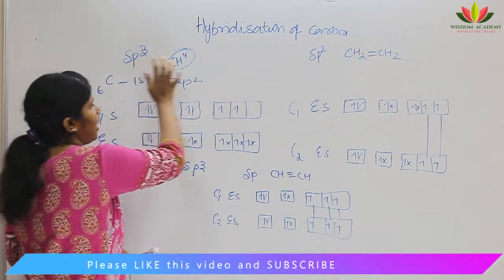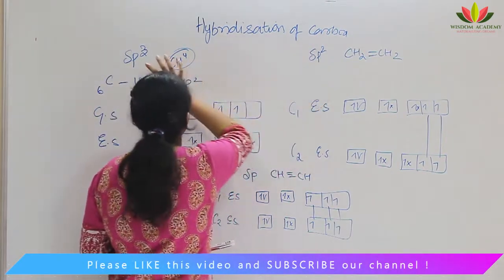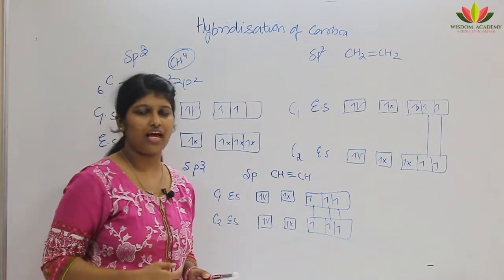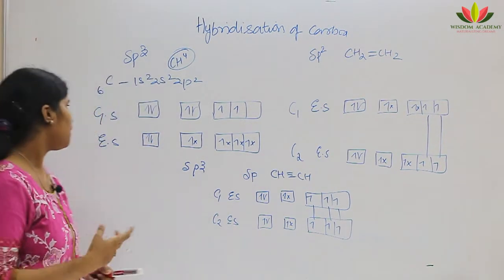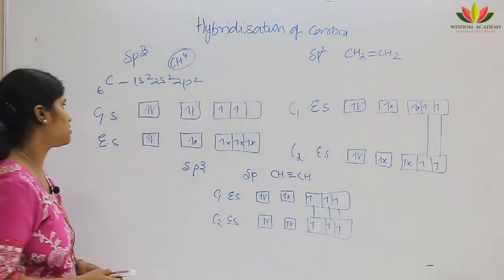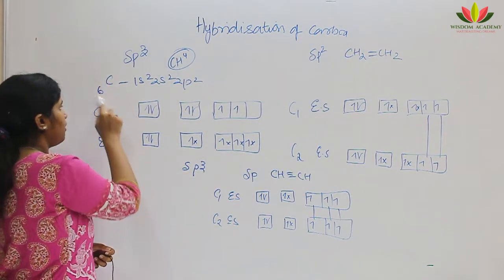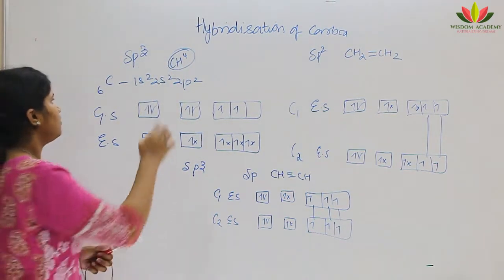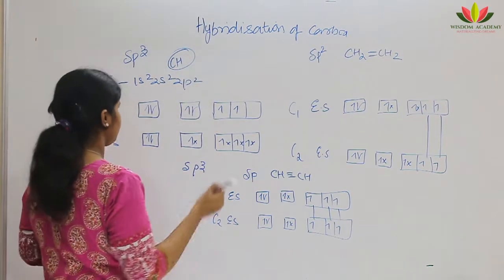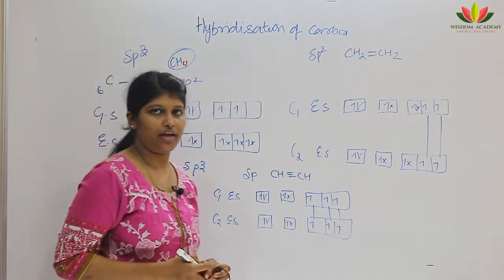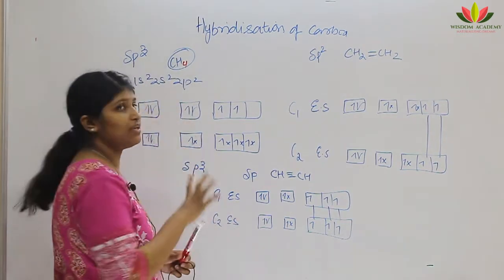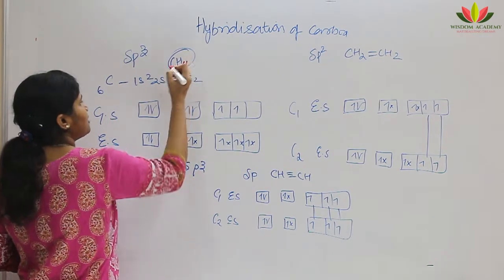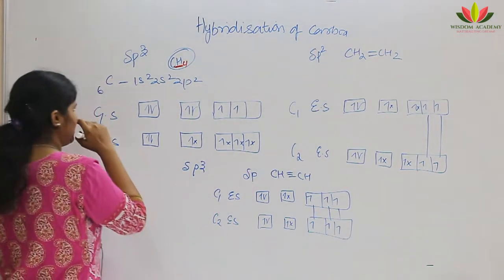I have taken all three hybridized states of carbon — sp3, sp2, and sp — with one example each. We will see how hybridization takes place and what things you need to remember. First, we take the sp3 example, which is methane, in which carbon is bonded with four hydrogens. In sp3, the valence is four and all four bonds are single bonds.